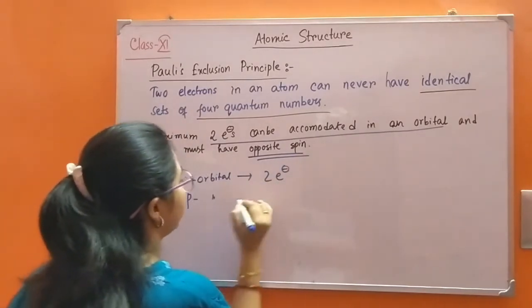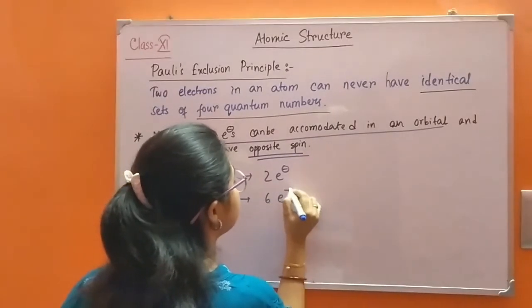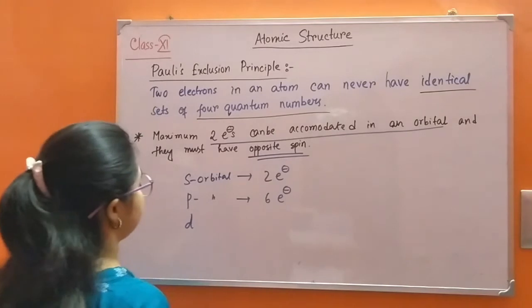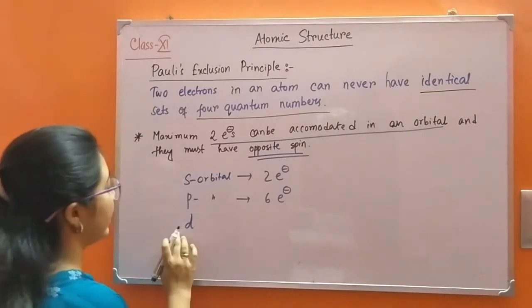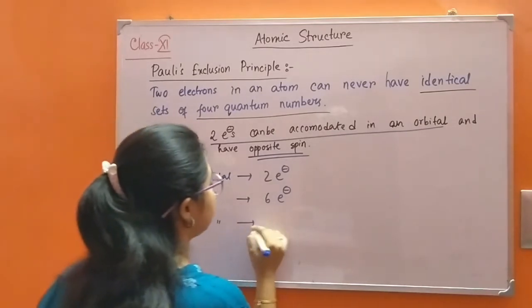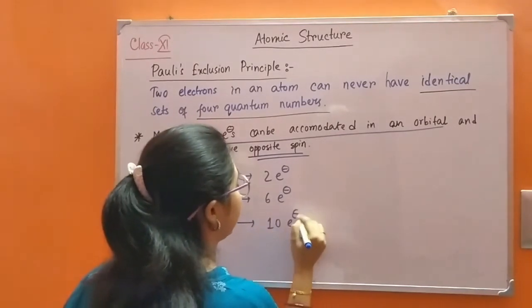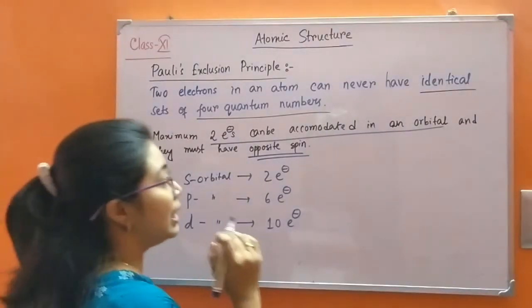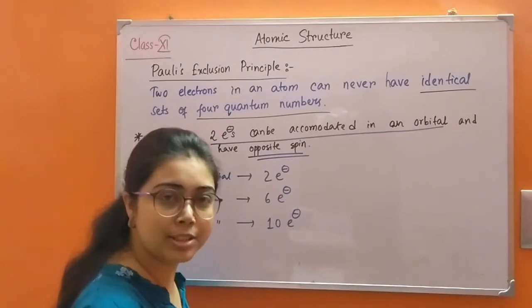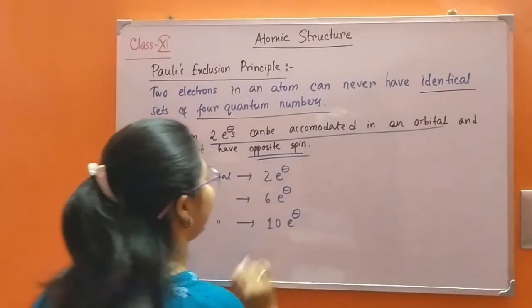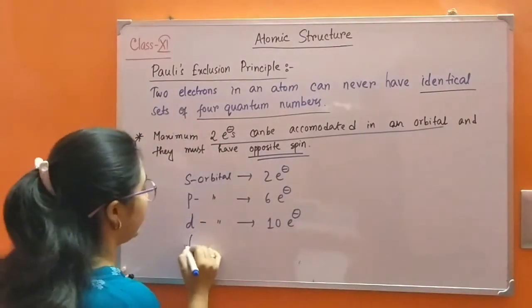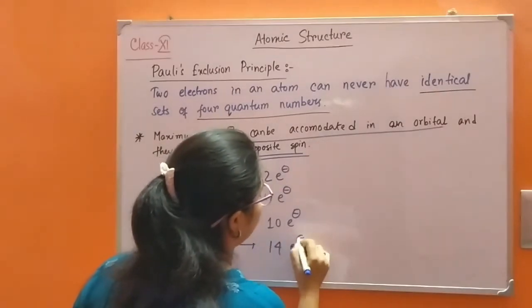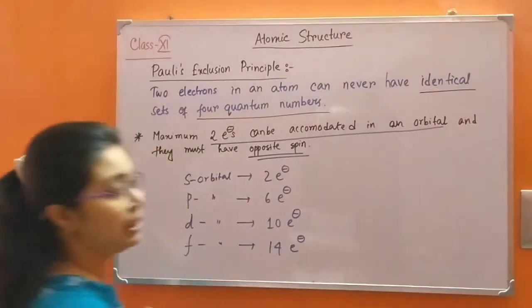In the S orbital, maximum two electrons can be accommodated. In the P orbital, maximum six electrons can be accommodated. In the D orbital, maximum 10 electrons can be accommodated because there are five D orbitals and each orbital holds two electrons, giving total 10 electrons. And in the F orbital, 14 electrons can be accommodated.